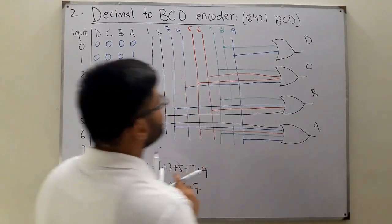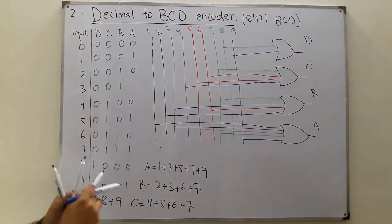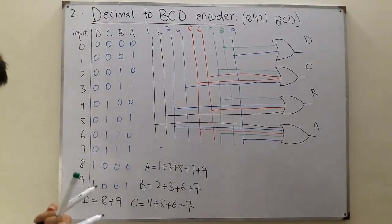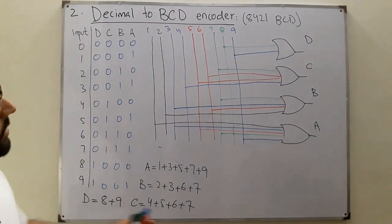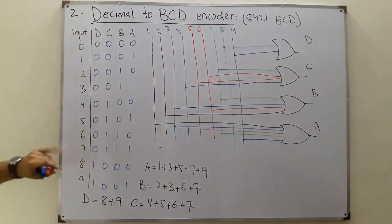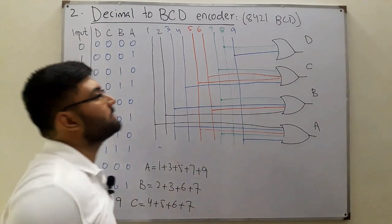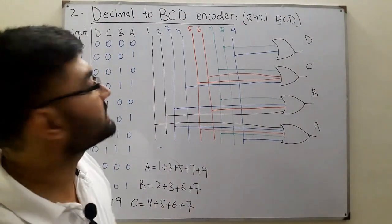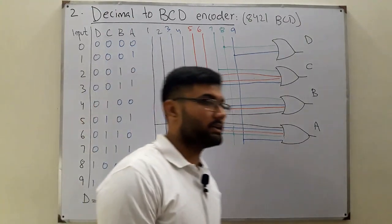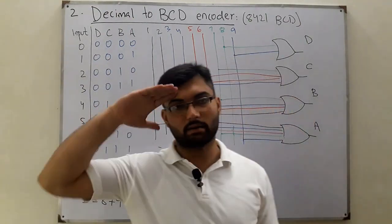That's how you obtain the circuit inside the encoder box. This is all about the decimal to BCD encoder - you give decimal numbers and you get their BCD equivalents. In the next lecture we discuss the octal to binary encoder. See you very soon, take care, goodbye.